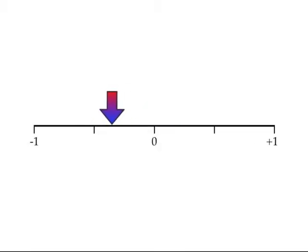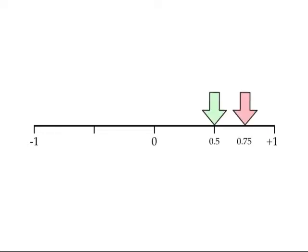The mathematical system we use for interactive storytelling is based on years of experience. We use something called bounded numbers — numbers constrained to fall between minus 1 and plus 1. The mathematical system is rigged so that no matter what happens, the numbers can never go out of bounds. Our bounded number system has its own mathematics; for example, we have what we call bounded sum. You can add two numbers together, but no matter what, the result will always be less than 1. For example, the bounded sum of 0.5 and 0.75 is only 0.8.